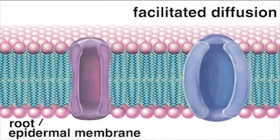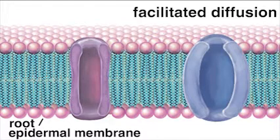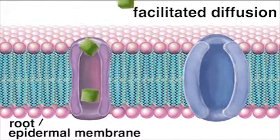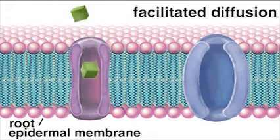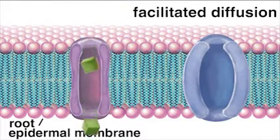Diffusion of mineral salts occurs at the same time. Facilitated diffusion occurs when important molecules pass through the membranes via special holes called channels.